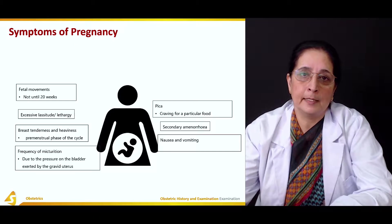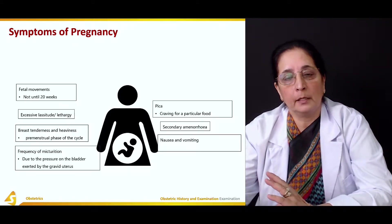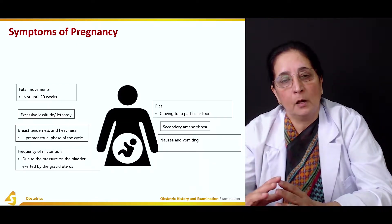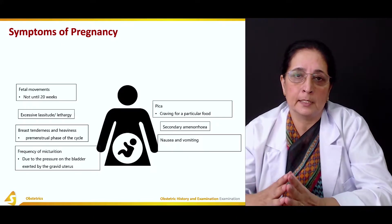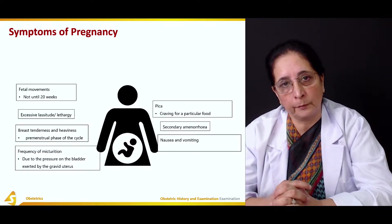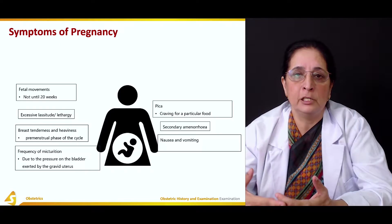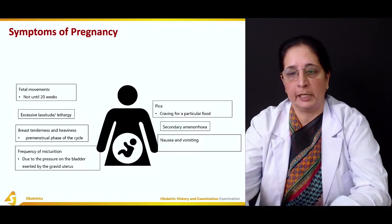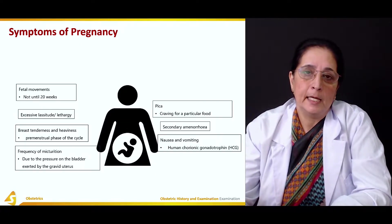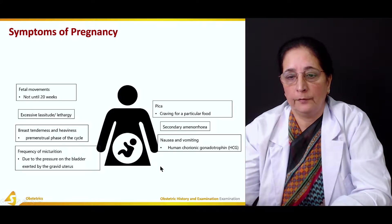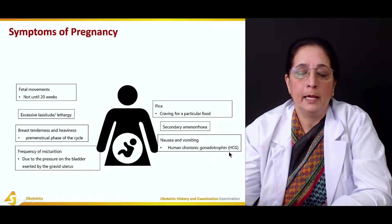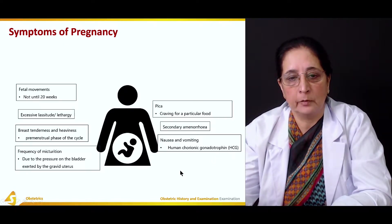Nausea and vomiting are very common, especially as early morning sickness in the first trimester. Some females experience nausea and vomiting throughout all nine months, while others only have it early in pregnancy and some don't have this problem at all. Nausea and vomiting during pregnancy is due to increased production of HCG — human chorionic gonadotrophin — which is produced by the placenta.